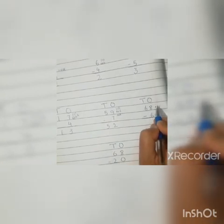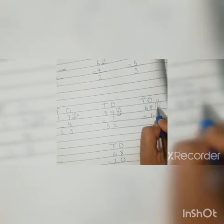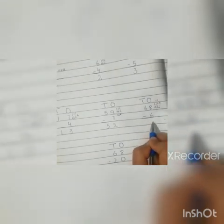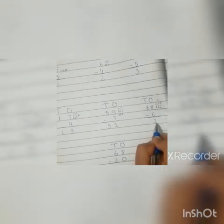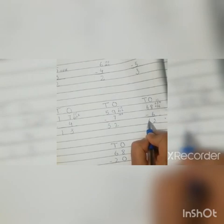Next: eight minus six in the ones. One, two, three, four, five, six, seven, eight. We cut off six lines: one, two, three, four, five, six. How many lines are left? Two. There is no tens digit to subtract, so six comes down. The answer is sixty-two.